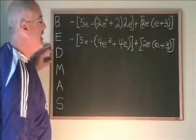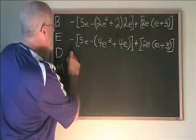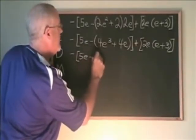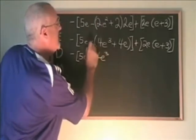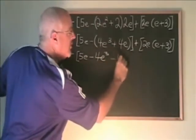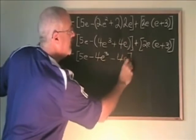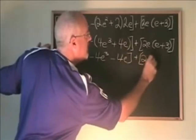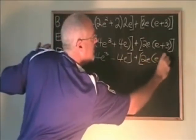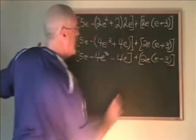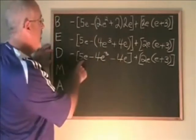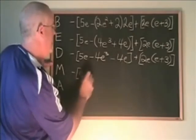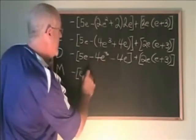Now I can remove the bracket and fix the signs. I get minus 4e cubed, and minus plus means minus 4e. 5e minus 4e is e, and the minus 4e cubed is carried down.